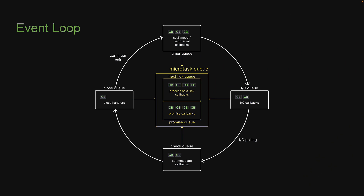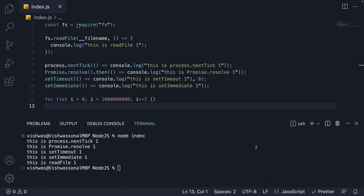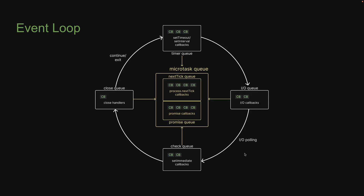In this video, let's run a few more experiments to understand better about the check queue. Please do watch the previous 5 videos before continuing. Now in the previous video, we understood about IO polling that happens in between the IO queue and check queue. That in turn helped us understand why readFile is logged after setImmediate. Now what if the IO polling was complete and a callback did exist in the IO queue? Let's conduct an experiment for that scenario.